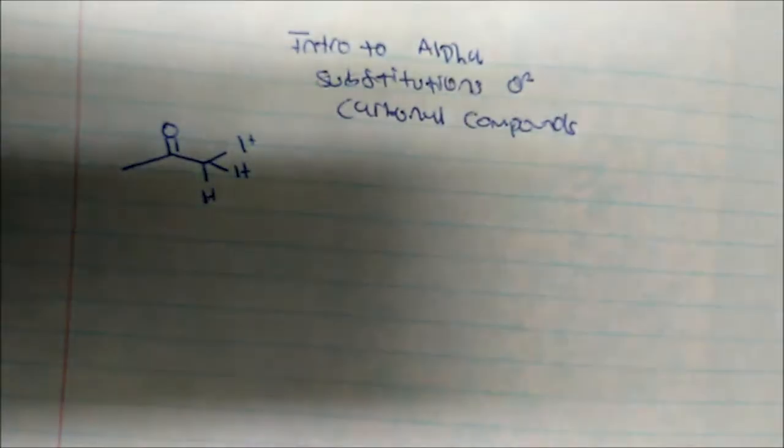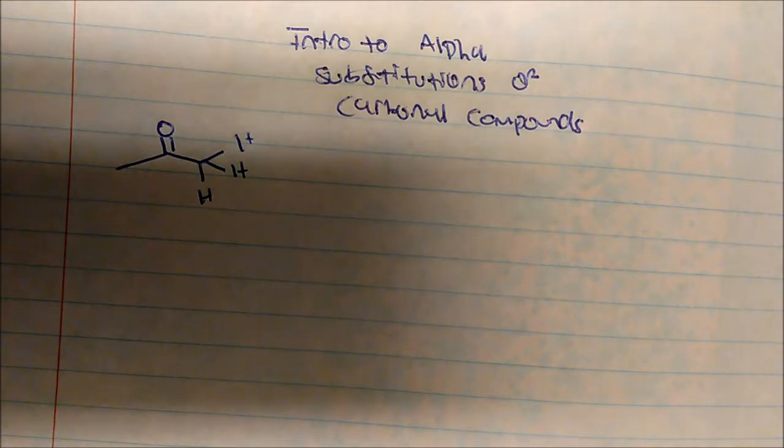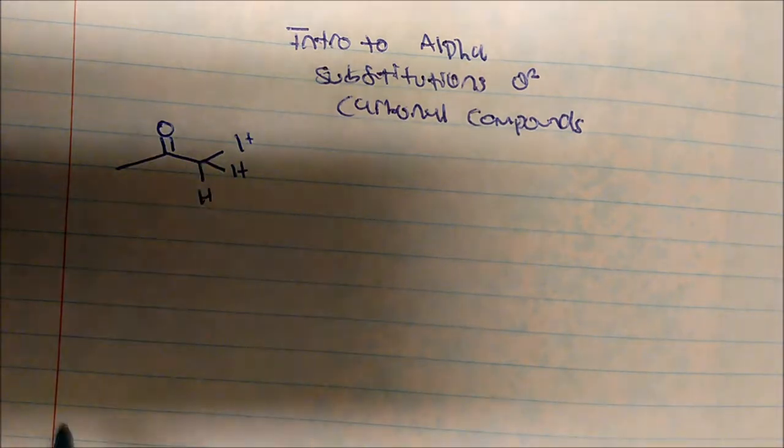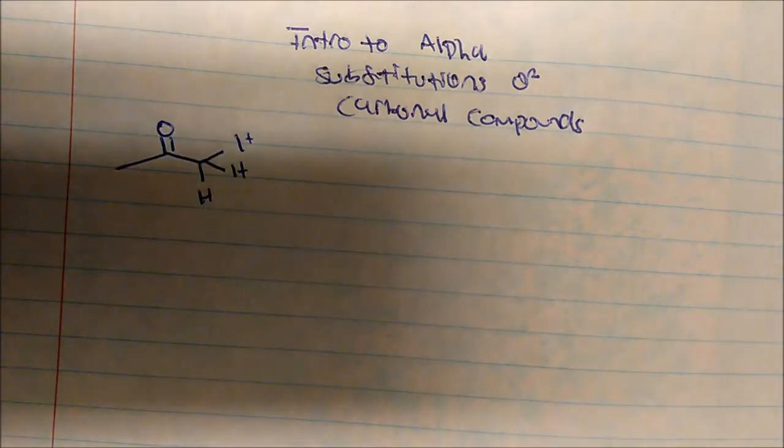When I look at the molecule of acetone, it has three hydrogens on any of the adjacent carbons. It turns out that the carbon adjacent to the carbonyl compound have these hydrogens that are relatively acidic.